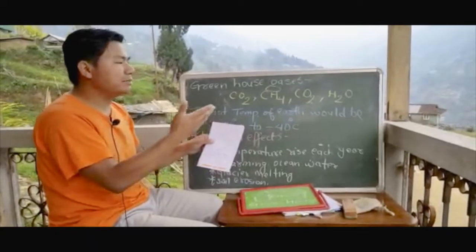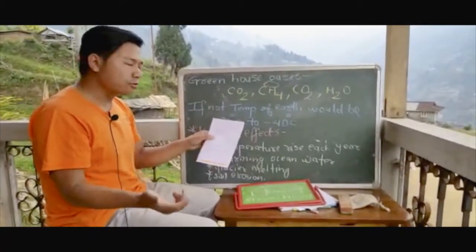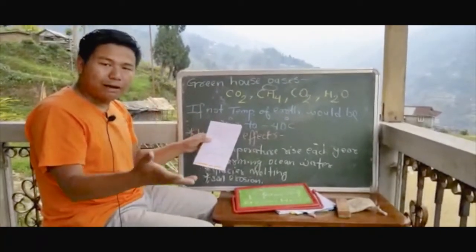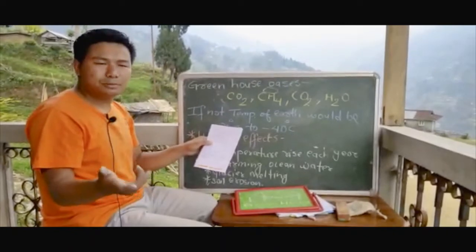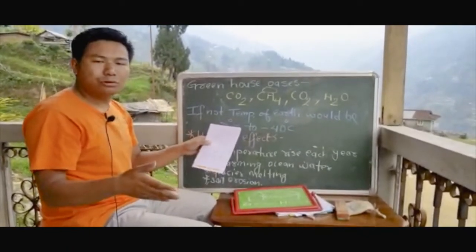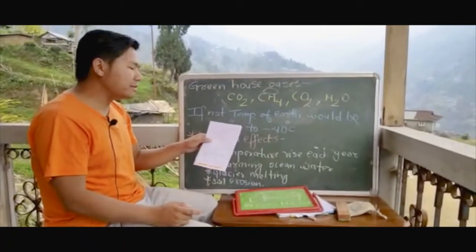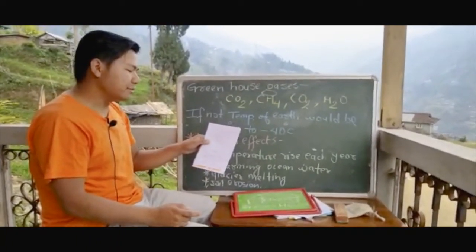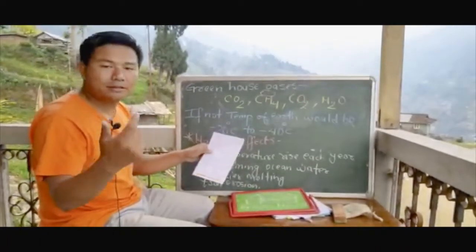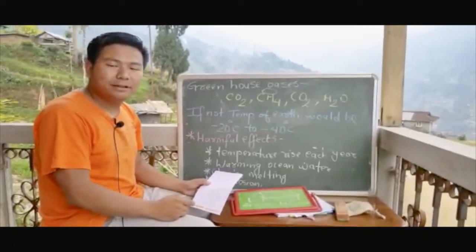Products like those generating carbon dioxide and methane need to be controlled. Lastly, we should use non-conventional renewable sources of energy such as wind, solar, and biogas, which we are going to discuss in the next topic on renewable and non-renewable sources of energy. Thank you so much.